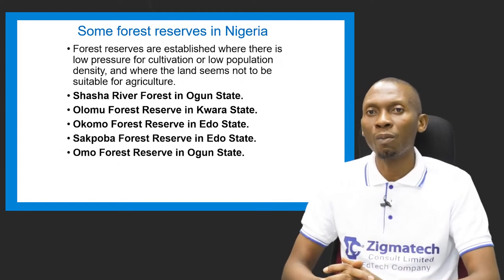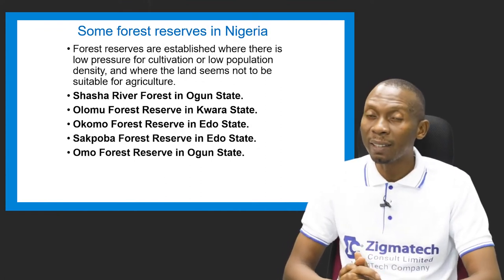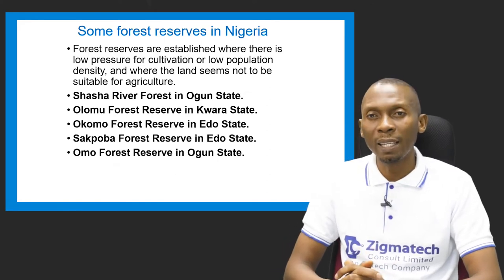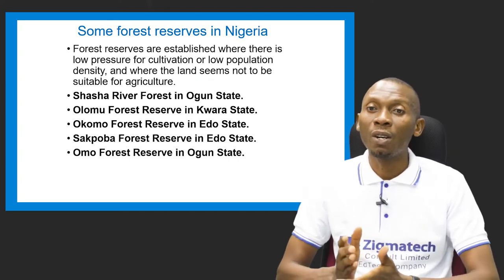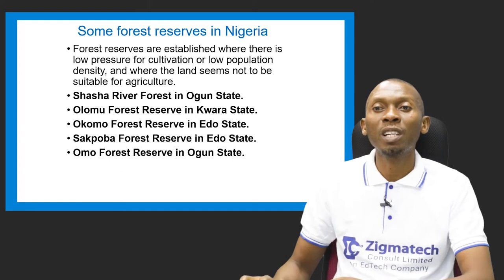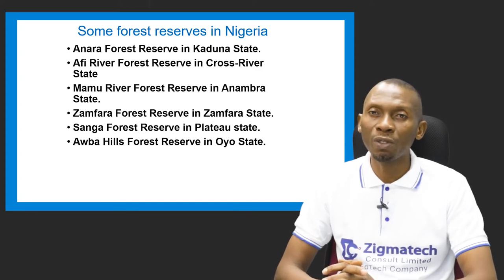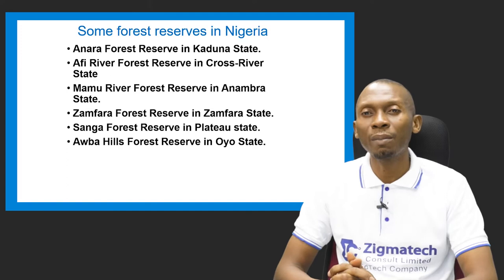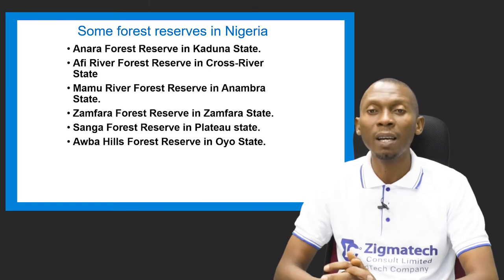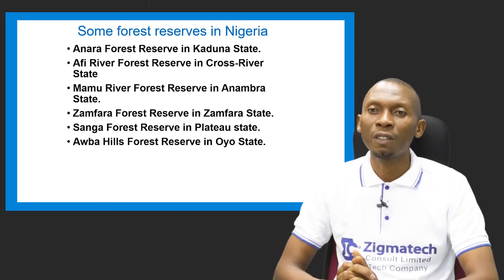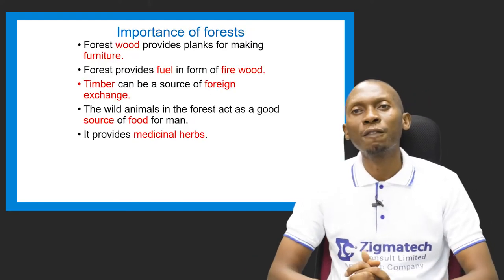Examples of forest reserves in Nigeria include: Shasha Forest Reserve in Ogun State, Onomo Forest Reserve in Kwara State, Okomu Forest Reserve in Edo State, Sokoba Forest Reserve also in Edo State, Anara Forest Reserve in Kaduna State, Afi River Forest Reserve in Cross River State, Mamu River Forest Reserve in Anambra State, Zamfara Forest Reserve in Zamfara State, Sanga Forest Reserve in Kebbi State, and Oba Hills Forest Reserve in Oyo State.